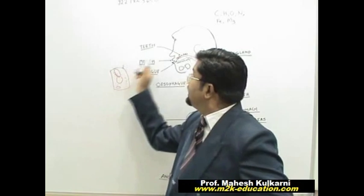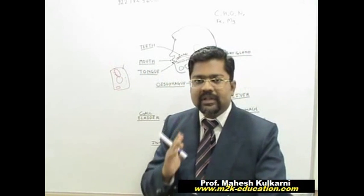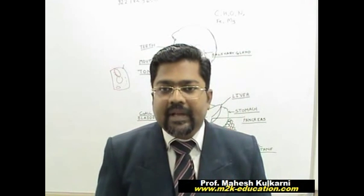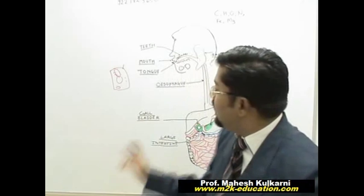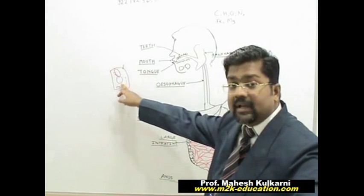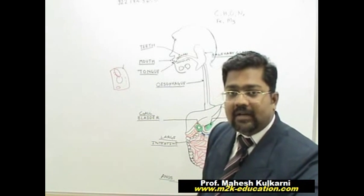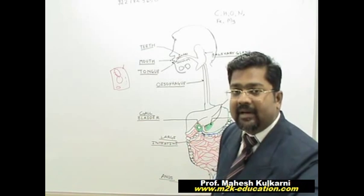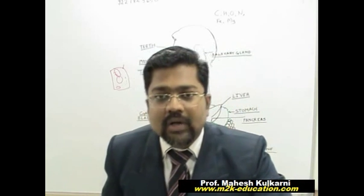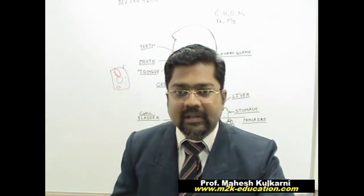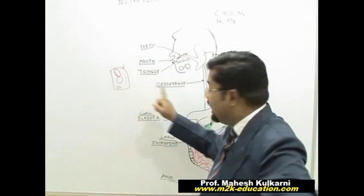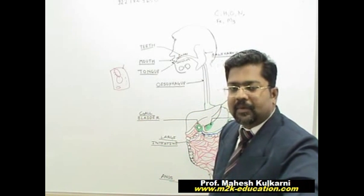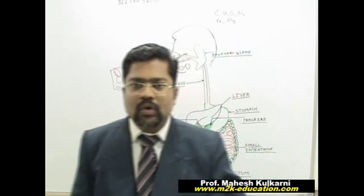Assimilation is the process where absorbed food goes inside the cell and becomes part of the protoplasm. If assimilation is not done, the food material can be poisonous — even digested food, if not absorbed immediately, can be harmful. Therefore assimilation is important, and the undigested or unwanted material is thrown out of the body through ejection.